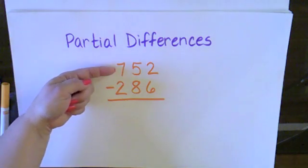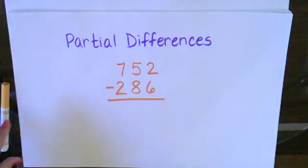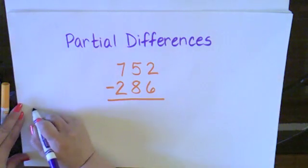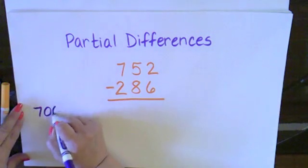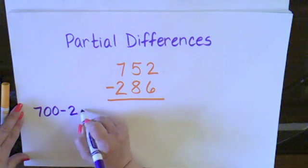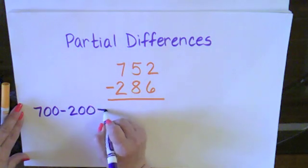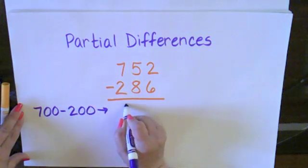I have 700 minus 200. So off to the side, I'm actually going to write 700 minus 200. And that gives me 500.